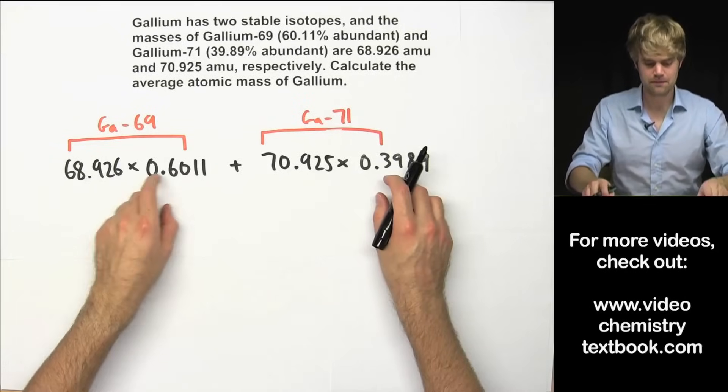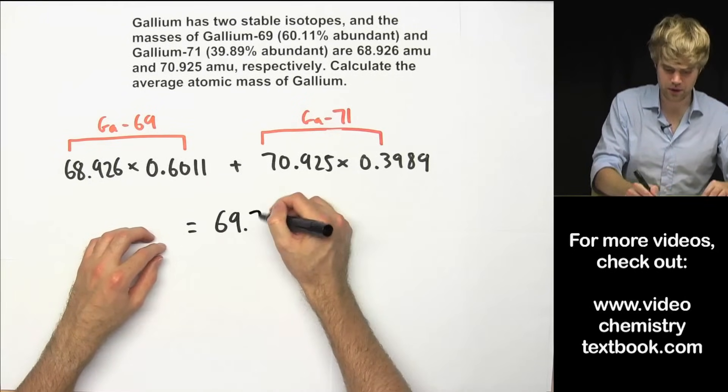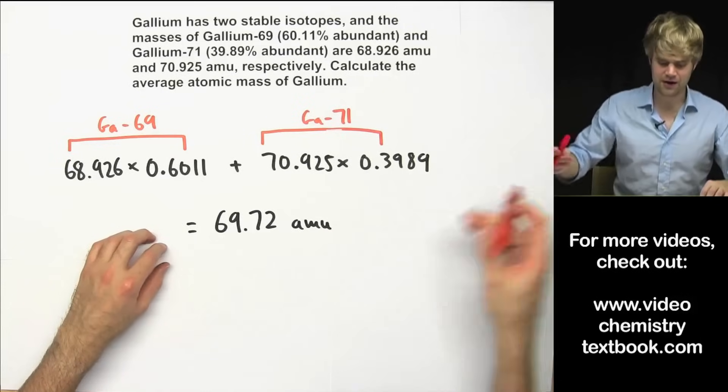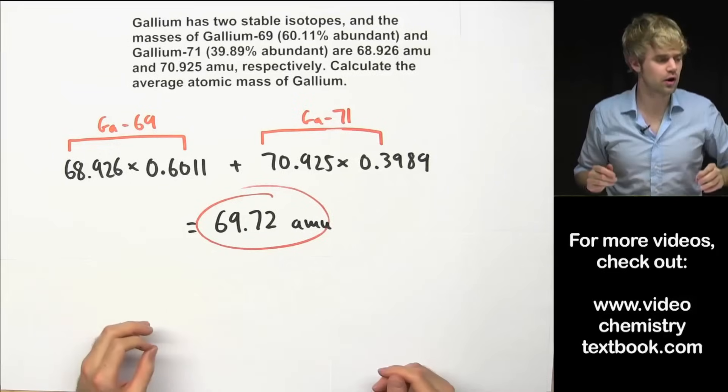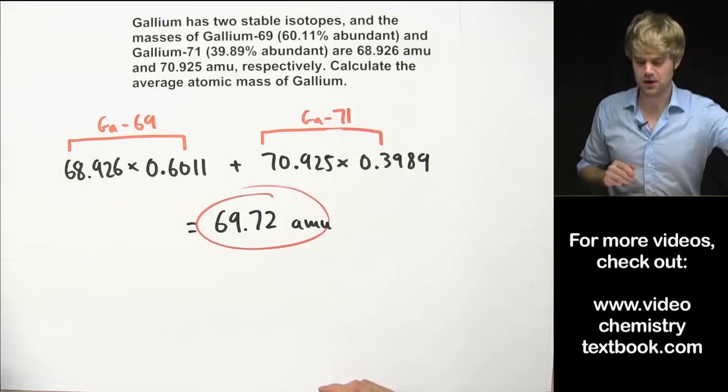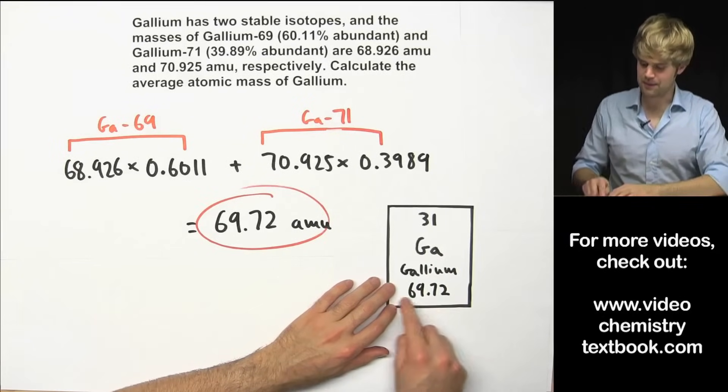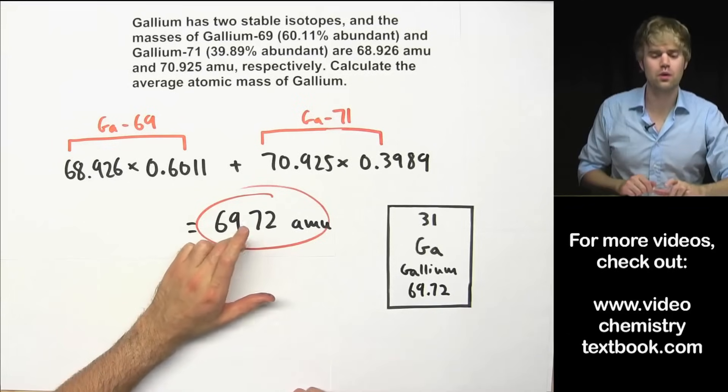Multiply both of these together and then add them up and what you're going to get is 69.72 amu for the average atomic mass of gallium. Now if you wanted to just check your work you could look gallium up on the periodic table. Here's what it would look like and underneath the element name is the average atomic mass which matches what we just calculated.